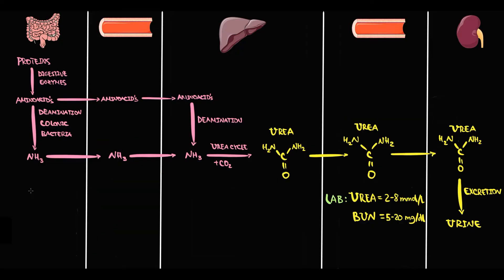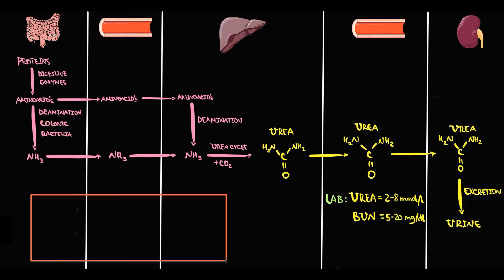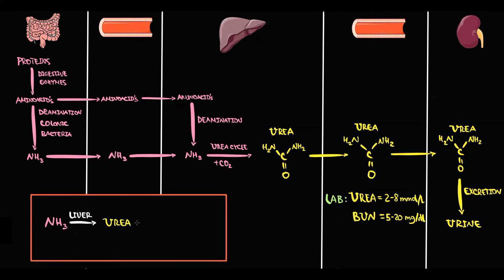To simplify this pathway: the level of urea in the blood is maintained by urea production — which is determined by the amount of ammonia molecules and the function of liver tissue — and by urea excretion, which is determined by the kidneys.